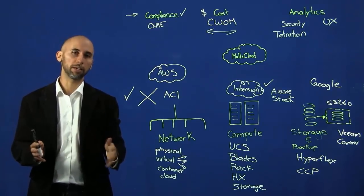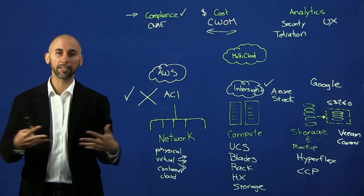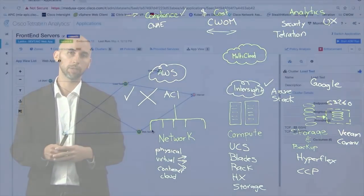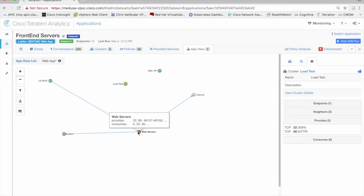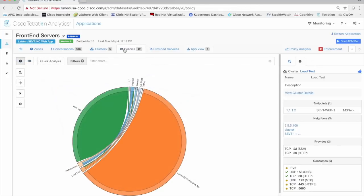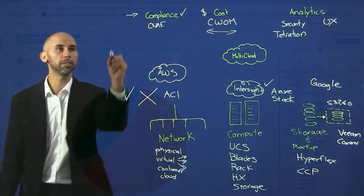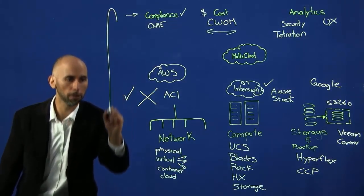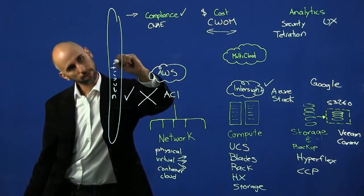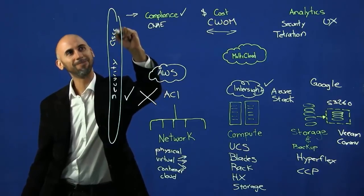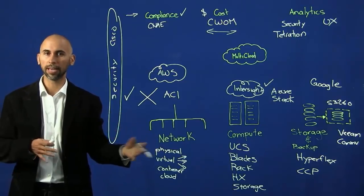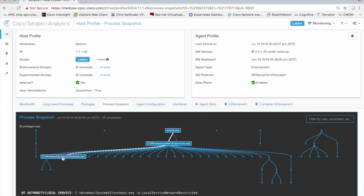Today's threats are constant, and understanding the way applications communicate is important to avoid opening unnecessary ports, and therefore adding potential risks. Tetration discovers automatically how your applications communicate and allows you to quickly identify any potential threat that may affect your business through Cisco security. This may help you understand how a device is communicating to other devices and provide you with visibility even at the process level.